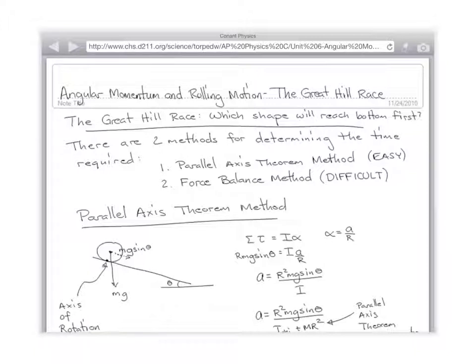There are two separate ways to figure out what the acceleration ought to be. One is the parallel axis theorem method, which is the easy way. And the other one is a force balance method, which is difficult. So, we're going to do it two different ways, and then we're going to compare them. Hopefully, they come up with the same answer. Parallel axis theorem method.